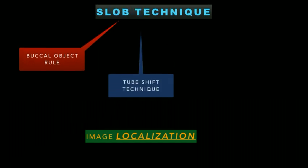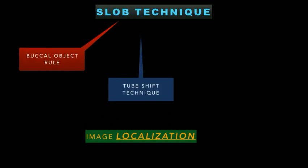Hi guys and welcome back to my channel. Today we will discuss a topic which many undergraduate students have difficulty understanding — the SLOB rule. The SLOB rule is an image localization technique that helps us understand the buccal-lingual orientation of an object. It was also called the buccal object rule, the tube shift technique, or the Clark's rule.